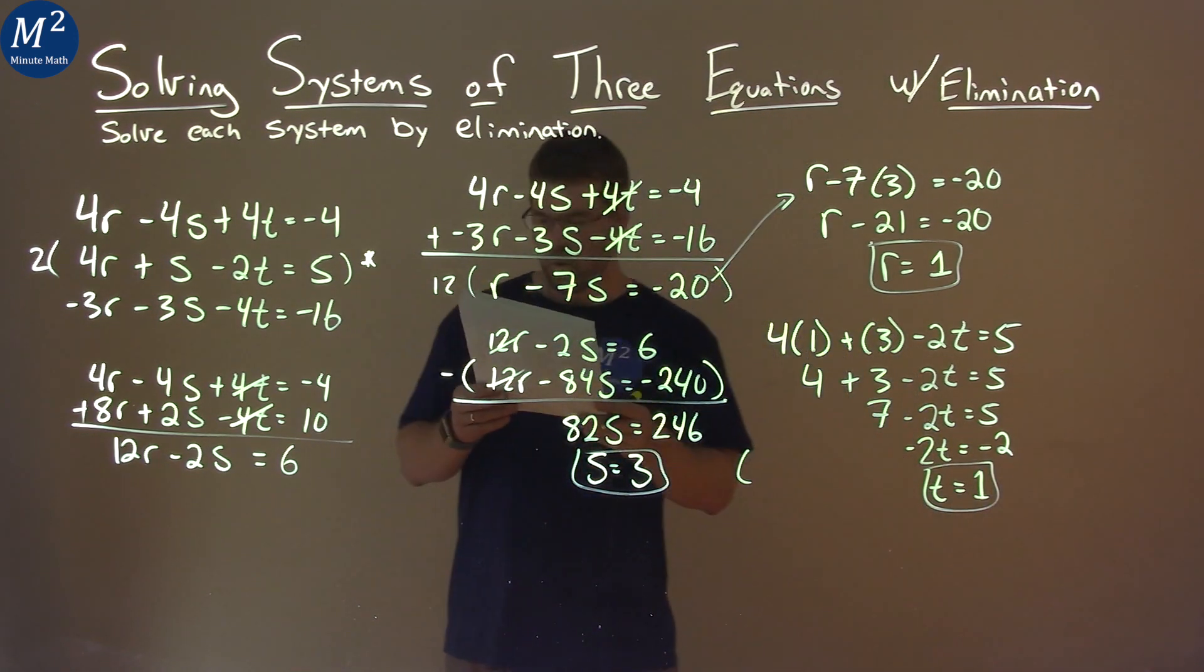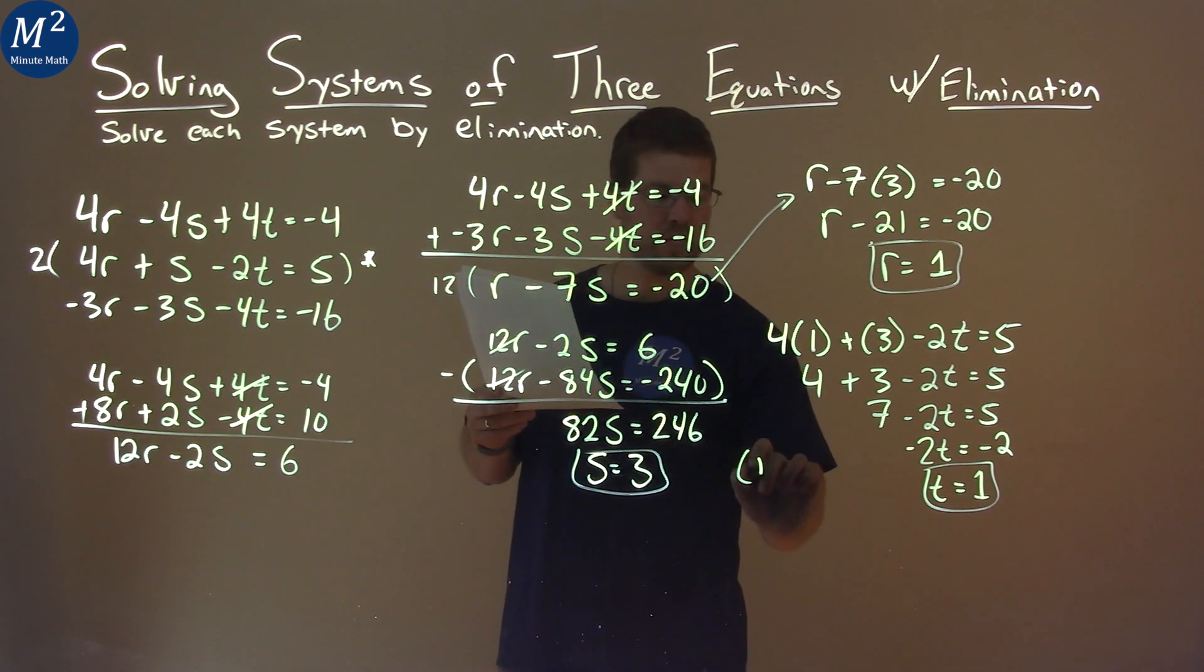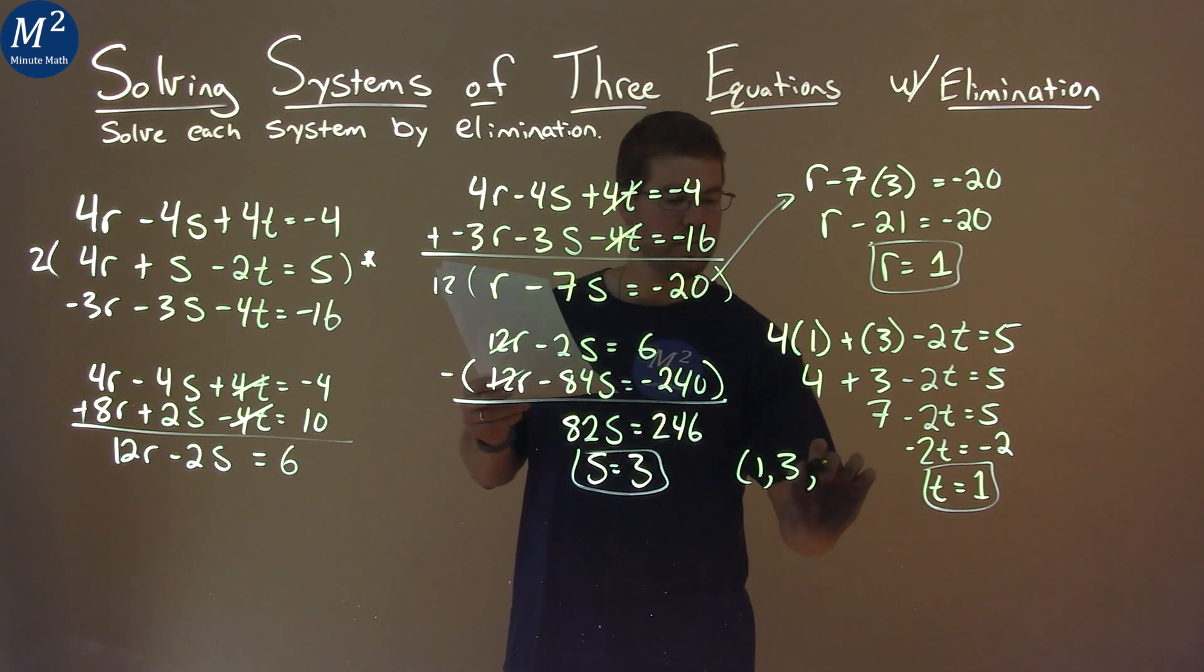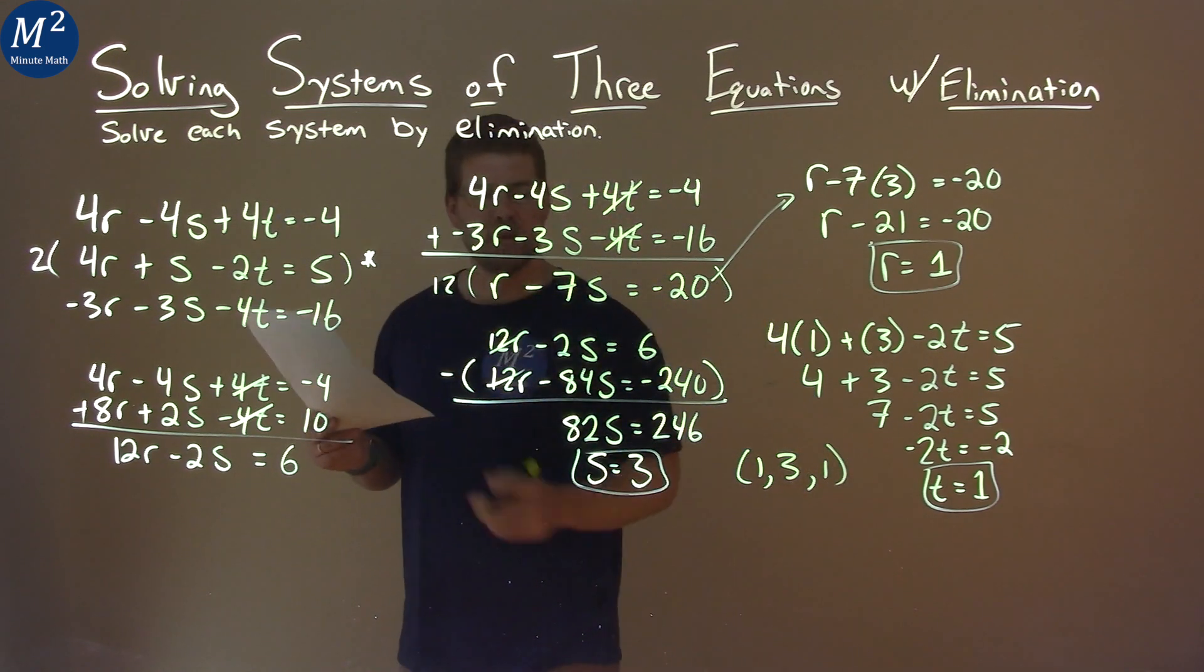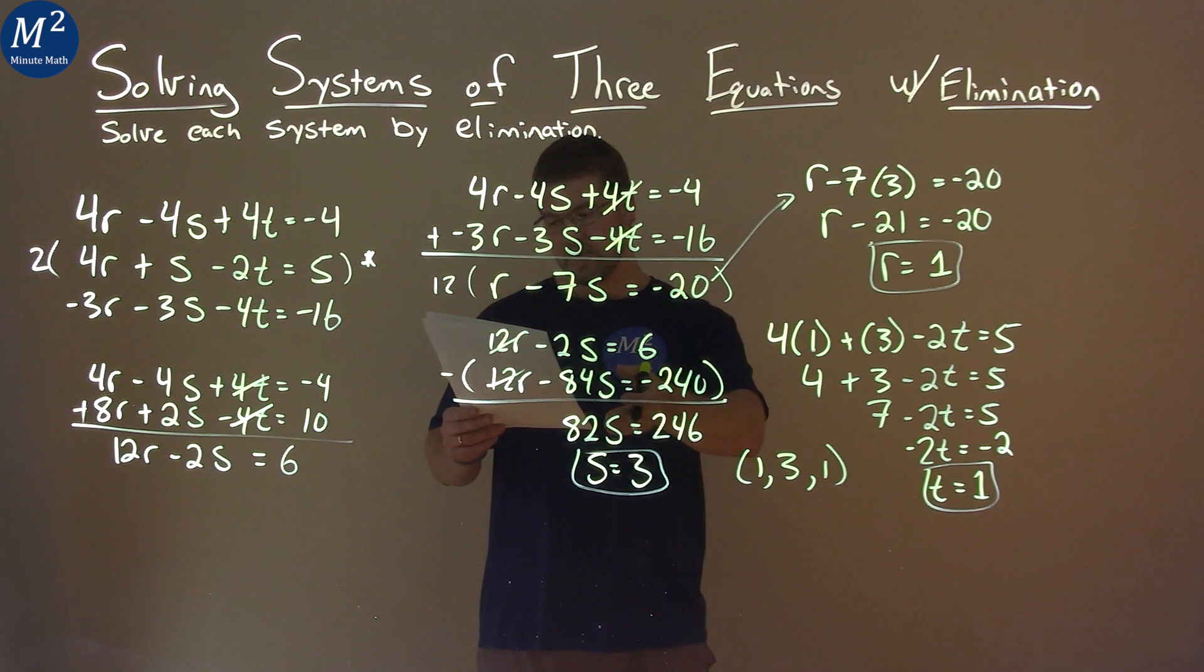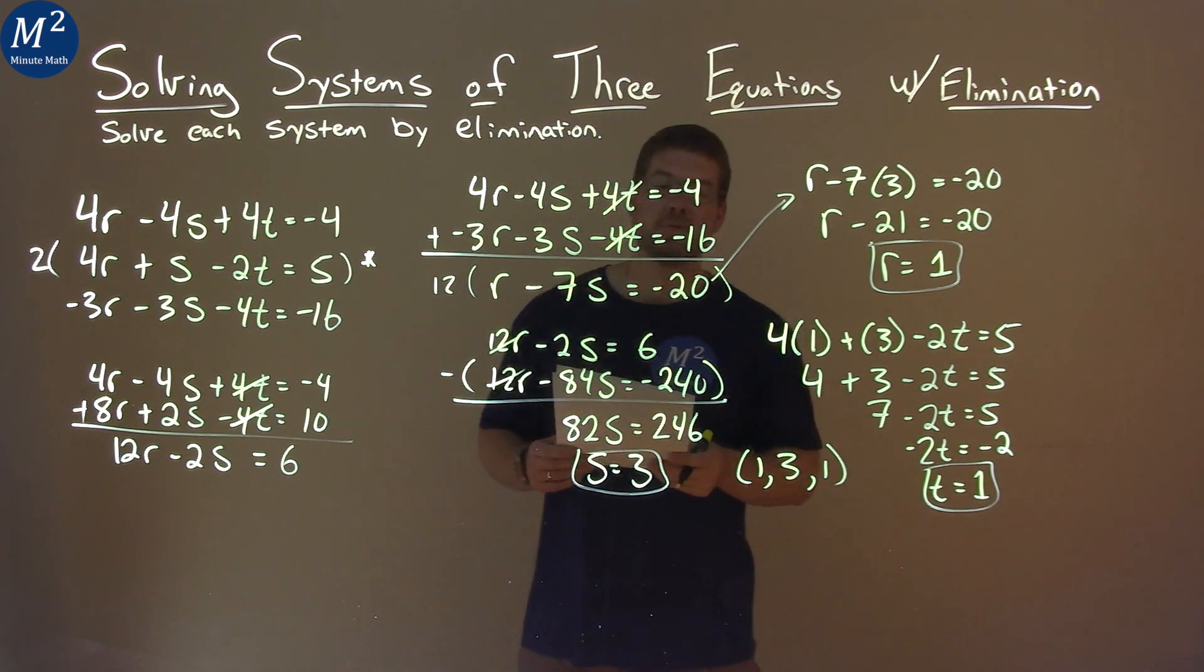So we can write this as a coordinate point of r being 1, s 3, and t 1, and that's the order they gave us in the variables here. That's our final answer. r is equal to 1, s is equal to 3, and t is equal to 1.